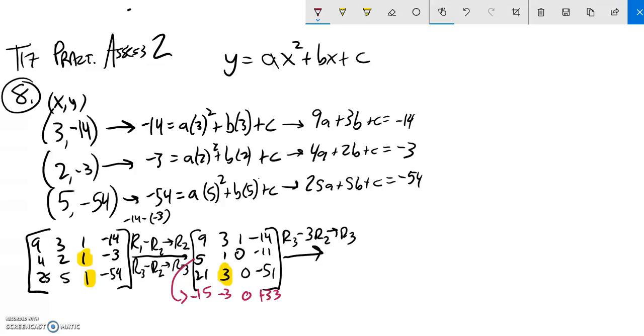I'm going to subtract it. So let me do that. First and second rows are not changed. So 9, 3, 1, negative 14. The next one, 5, 1, 0, negative 11. And let's see. 21 minus 15, that's 6. 3 minus 3 is 0, 0 minus 0 is 0, negative 51 minus 33, negative 18.